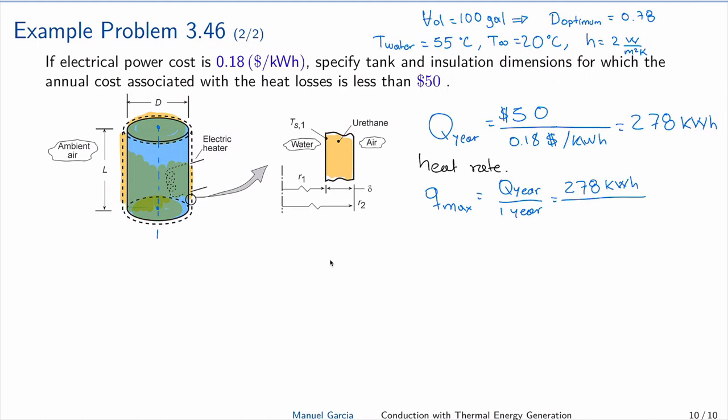So this is 278 kilowatt hours, and one year is 365 days times 24 hours. So Q_max is 31.7 watts. This is our starting point - the energy rate that is released to the air through the wall.